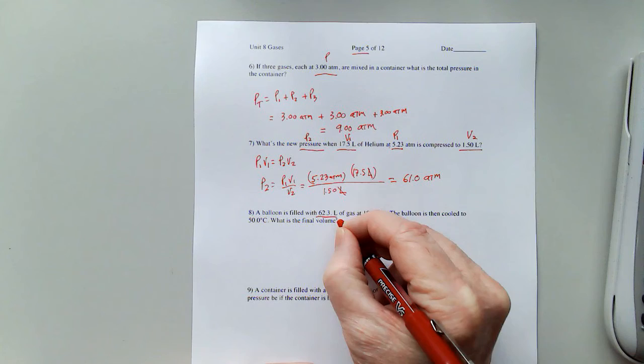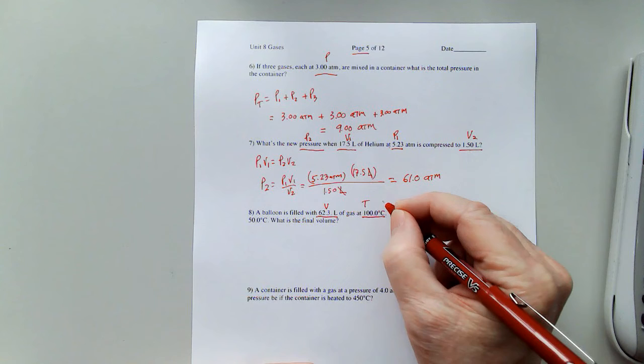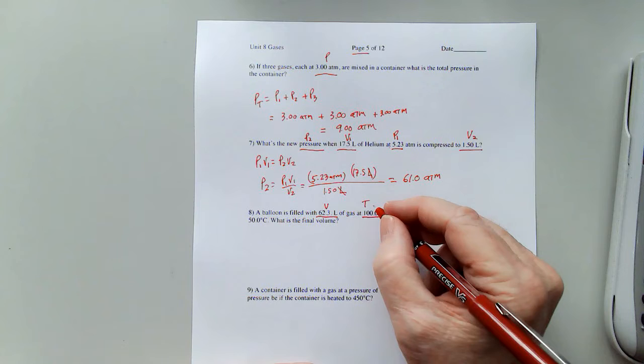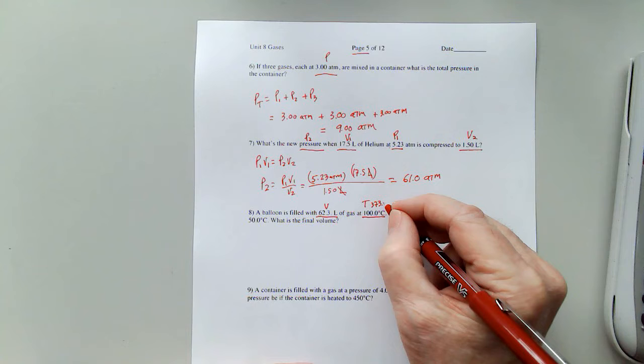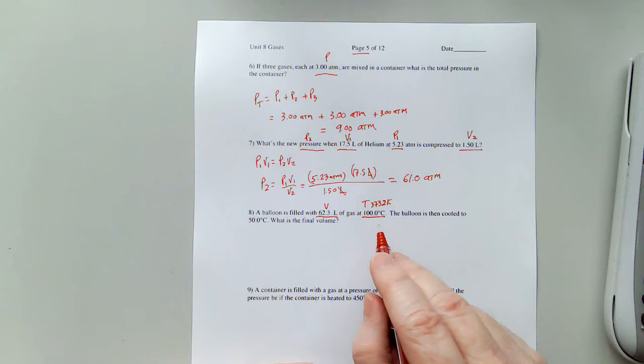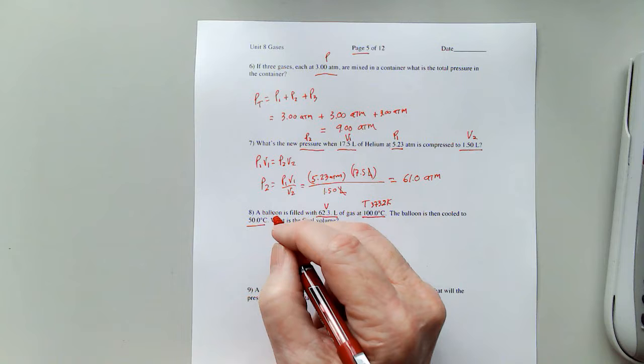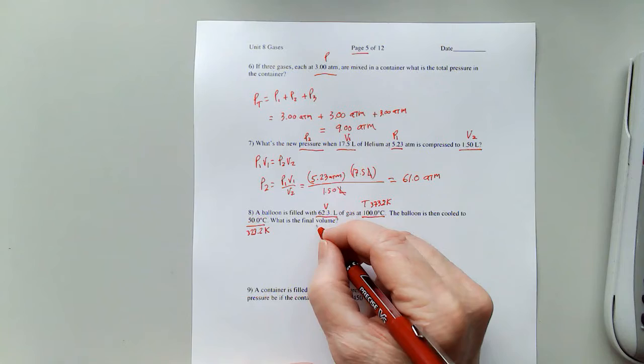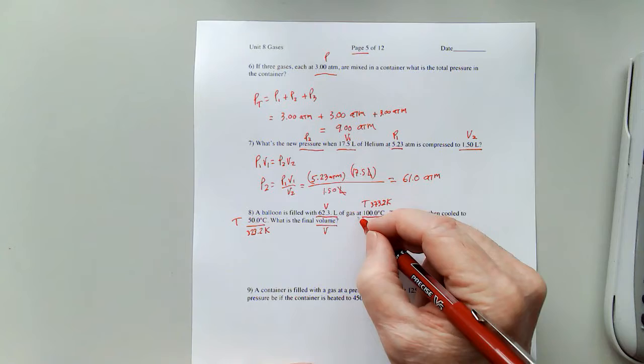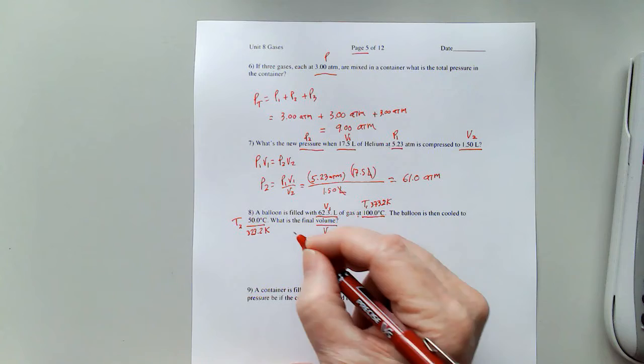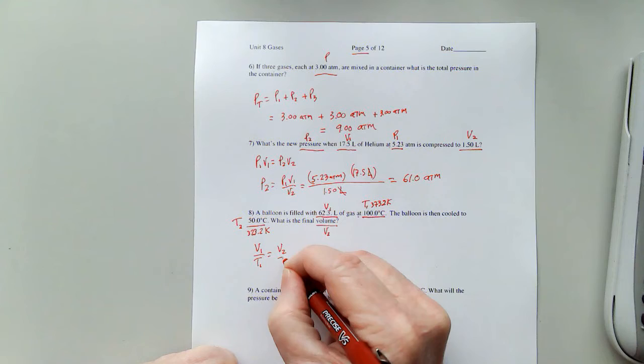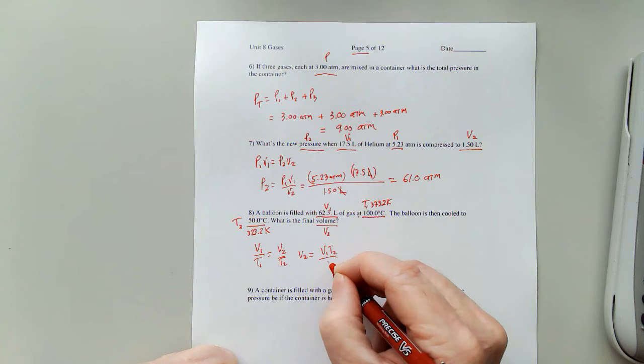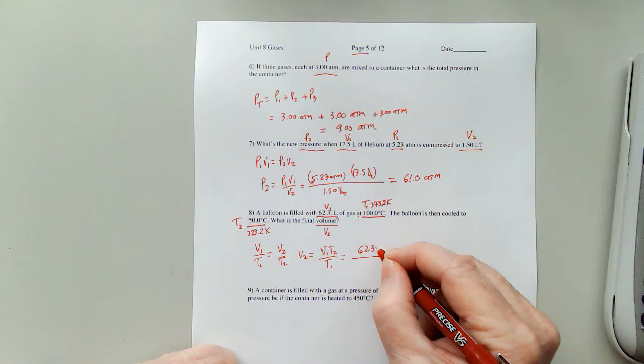On to number 8. A balloon is filled with 62.3 liters, which is a volume of gas at 100 degrees Celsius temperature. That's going to be 273 plus 100, 373.2 Kelvin if I add 273.15. The balloon is then cooled to 50 degrees Celsius, so that's going to be 323.2 Kelvin. That's our temperature. What is the final volume? So since I've got the word at here, I'll make this V1 and T1, I'll make this V2 and T2. Charles Law. V1 over T1 equals V2 over T2. V2 is going to equal V1 T2 over T1.